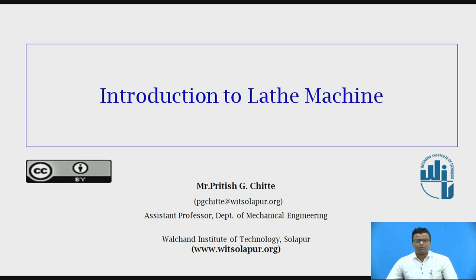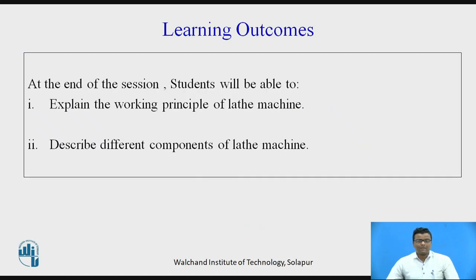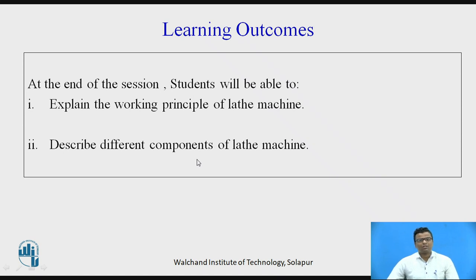There are different types of machines like lathe machine, shaping machine, drilling machine, milling machine, and planing machine. These are parts of manufacturing technology courses. Now these are the learning outcomes: the students will be able to explain the working principle of the lathe machine and describe the different components or parts of the lathe machine.